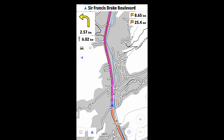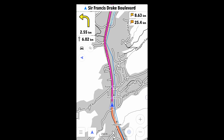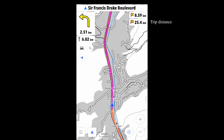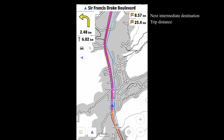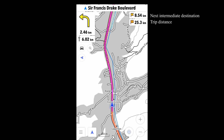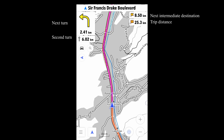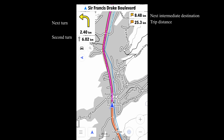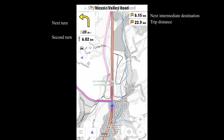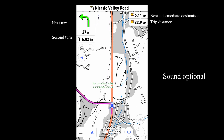Here's what OsmAnd looks like on the road. As I've configured the screen here, we're seeing the trip distance and the distance to the first intermediate destination, both on the right. The distance to the next turn and the turn after that are on the left. Turn left onto Nicasio Valley Road.